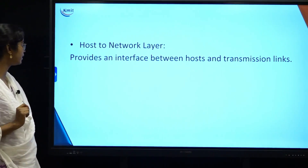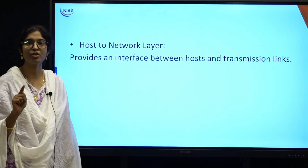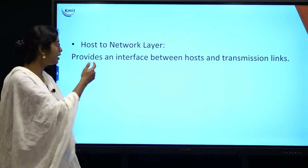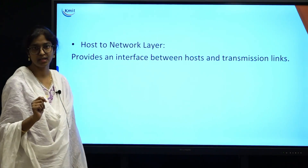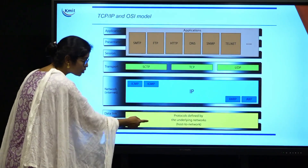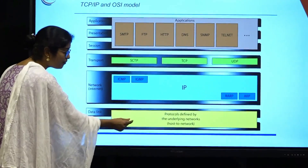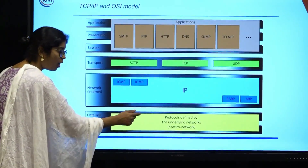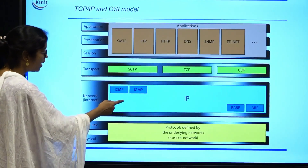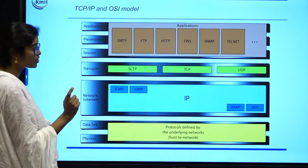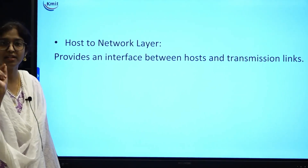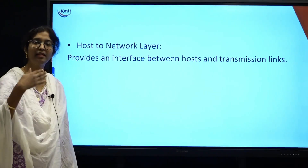The first layer is the host-to-network layer, which is a combination of the physical and data link layers. It provides an interface between the host and the transmission links. There are no particular specific protocols defined by TCP/IP at this layer — all other protocols are supported. At the other layers, you can see a collection of protocols at the network, transport, and application layers, which is why it is called a protocol suite.